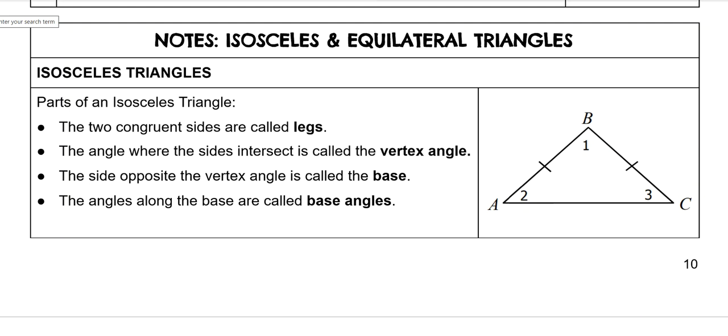It has two congruent legs, so this side is called a leg and this side is called a leg, and you know they're congruent by these tick marks. They tell you that those sides are the same. And then the angles where the sides intersect is called the vertex, so this angle right here. Angle one is the vertex.